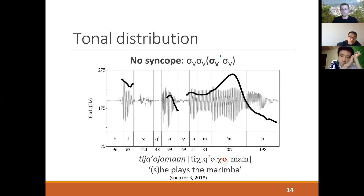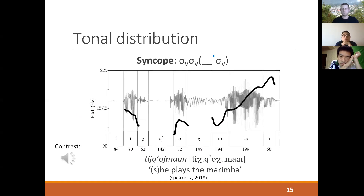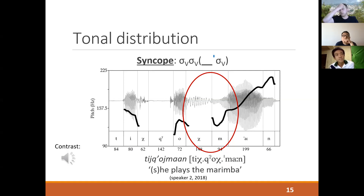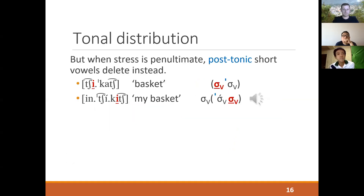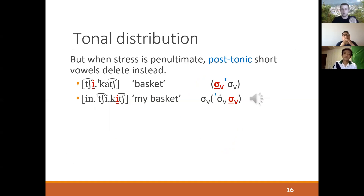To give you some data points: this is the word for 'she/he plays the marimba.' Here we have a speaker producing this word without deletion, and here the same word produced by a different speaker with the vowel deleted — no evidence for that underlying 'o' between consonants. The key observation for the foot-based analysis is that when you have penultimate accent, the position targeted by vowel deletion flips. It's no longer pre-tonic position that's selectively targeted — now it's post-tonic position.